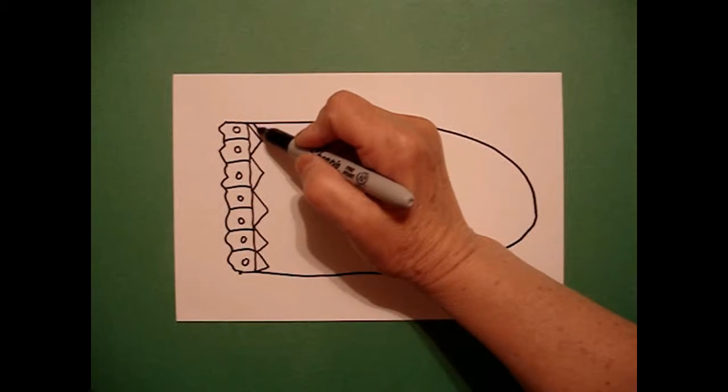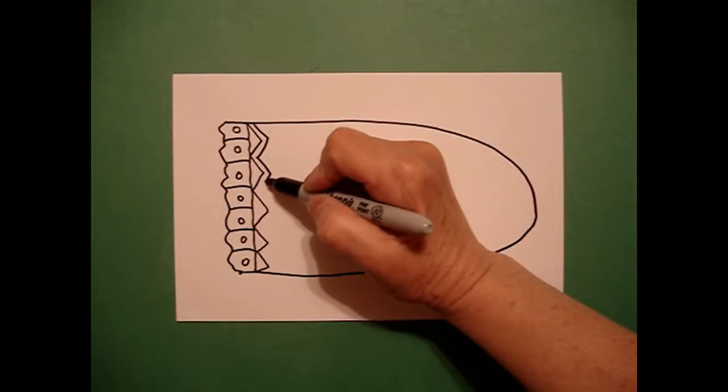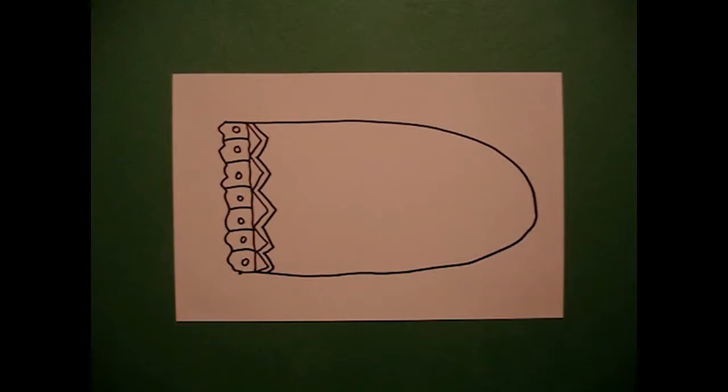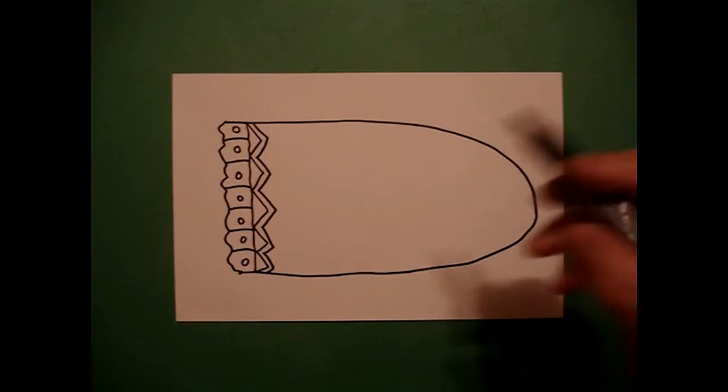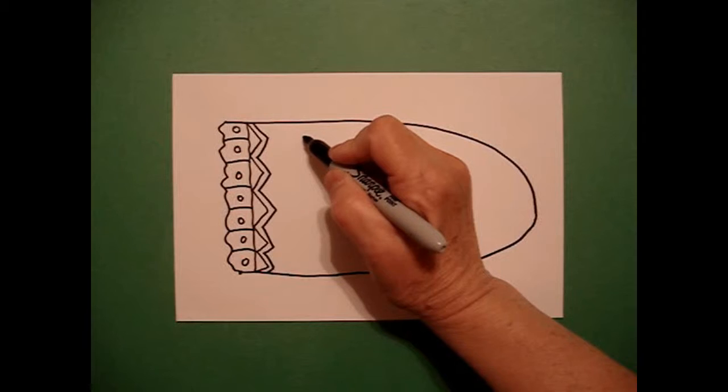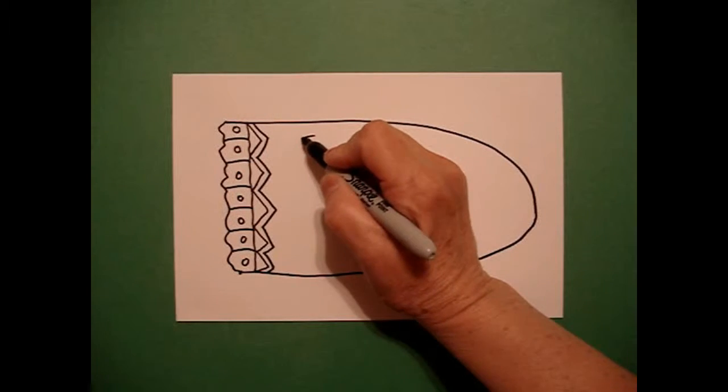So what used to happen, let's zigzag this first: zigzag, zigzag, zigzag, zigzag, zigzag. Scrimshaw is what the whalers used to do when they were having downtime in between catching whales. So they would scratch designs into the actual teeth that were left over.